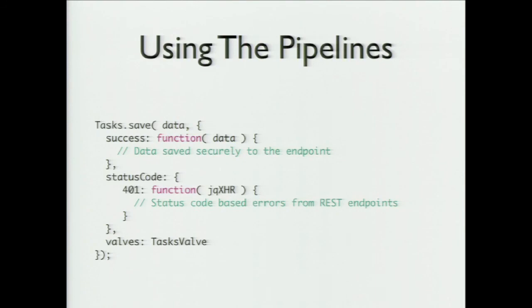So how do you actually use the pipeline? Imagine the user clicked a new task button — you say tasks.save, pass in the data from a form, and in the success callback you do whatever you need to. If there's an error, you can switch off of the response code of the RESTful endpoint — so you can switch on a 401 unauthorized versus a 404. On a 401 you'd handle it by showing the login screen again. This is all you have to write repeatedly — some setup code and then calls as slim as possible.